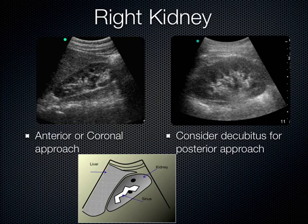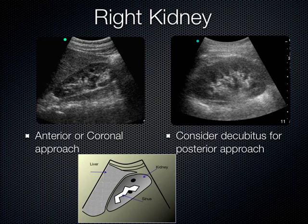We can see the kidney here with the cortex, and the adjacent liver on the right side. Sometimes a loop of bowel blocks the lower pole of the kidney — bowel gas being the enemy of ultrasound. Moving the probe more posteriorly allows us to see the entire kidney in one view. On the left side, because the spleen isn't as large, we lose more of the lower pole, so I go more posteriorly more often on the left.